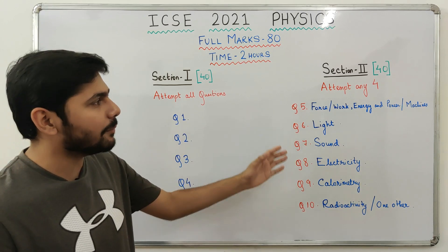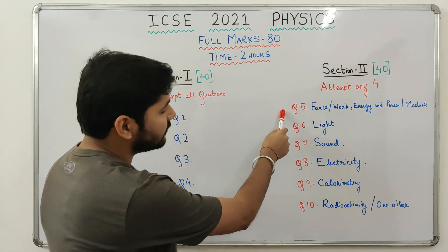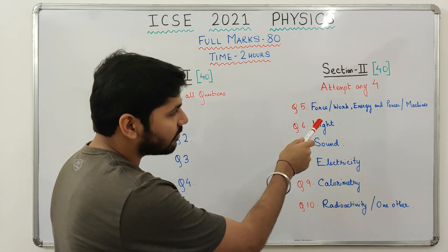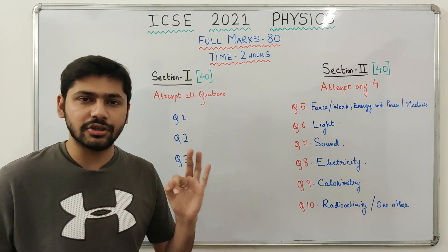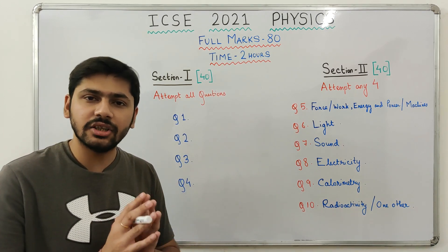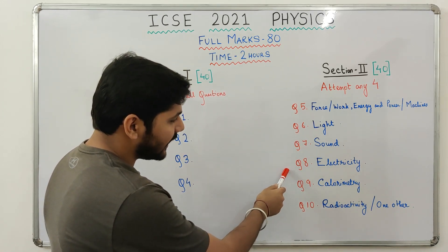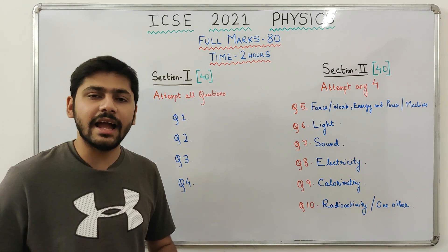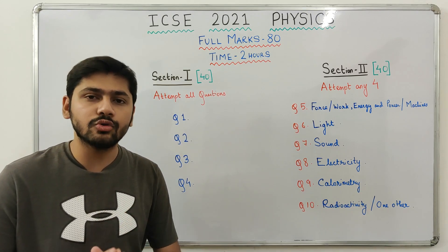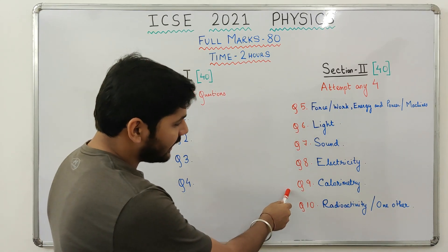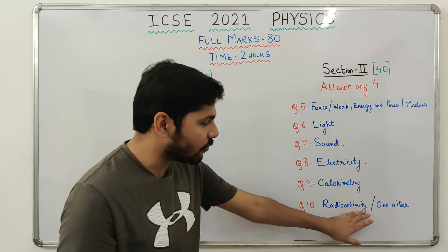There is a general chapter combination in Section 2. Question 5 is from force, work, energy, power, and machines. Question 6 is from light — all three chapters: refraction of light, refraction through a lens, and spectrum. Question 7 is from sound. Question 8 is from electricity, meaning both current electricity and household circuits. Question 9 is from calorimetry, and question 10 is from radioactivity and one other chapter.